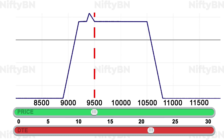The risk graph of the iron condor with the Christmas tree butterfly spread with puts added would then look like this. Here again the adjustment has removed some risk on the put side. But since this is also done for a debit, there is some sacrifice on the reward side. But if the price of the underlying ends exactly at the middle strike of the Christmas tree spread with puts, we get to make more profit than the original iron condor. Note that by adding the positive gamma options positions, we have not only put brakes on the gamma risk, but also created opportunities to profit more.